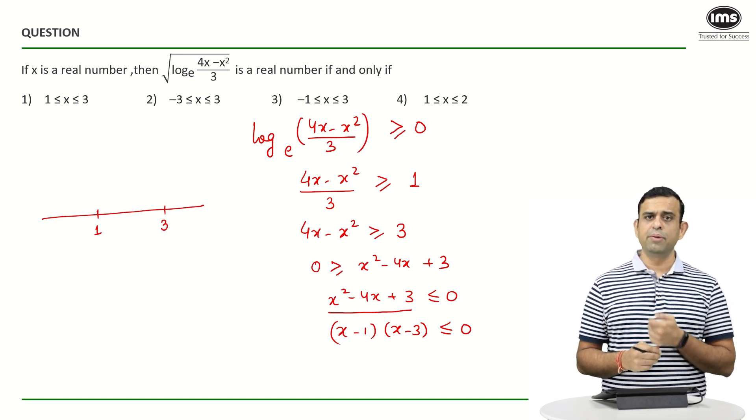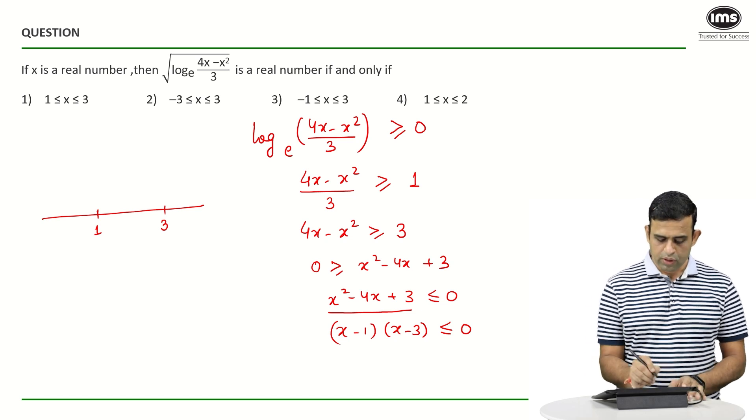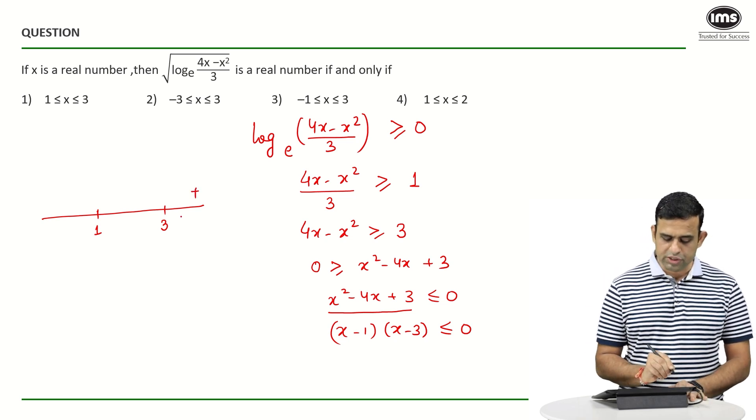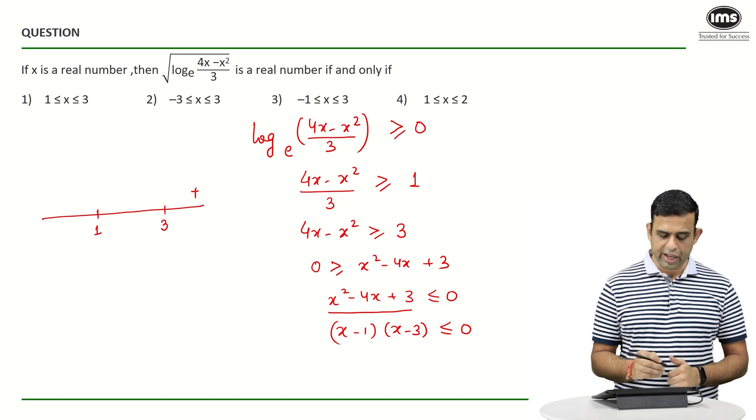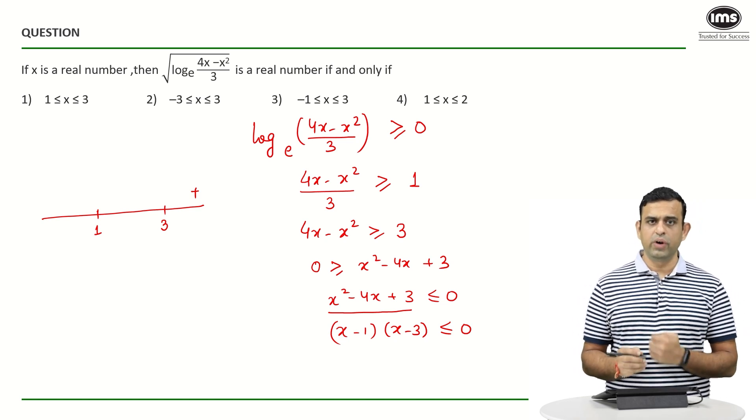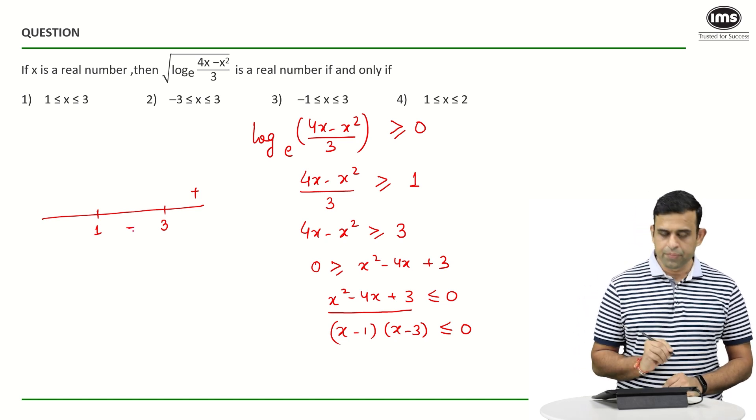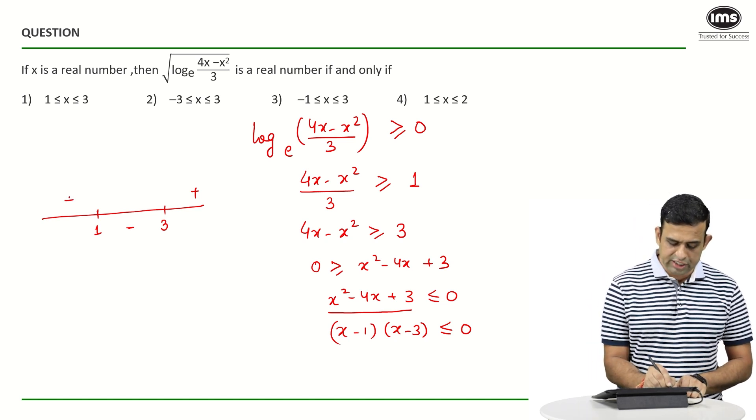On the right of 3 we have positive. Definitely there has to be a sign change around the root. So between 1 and 3, the expression will be negative. On the left of 1, again there will be a sign change and the value becomes positive.